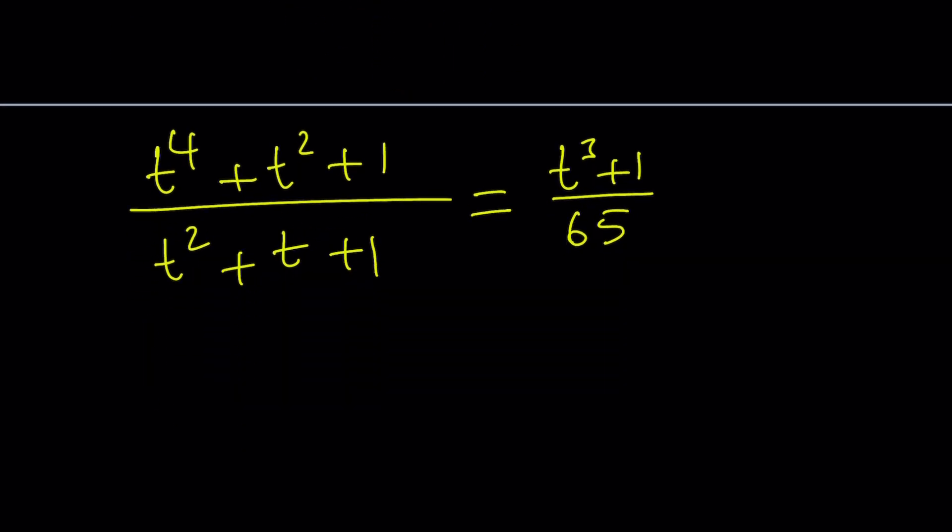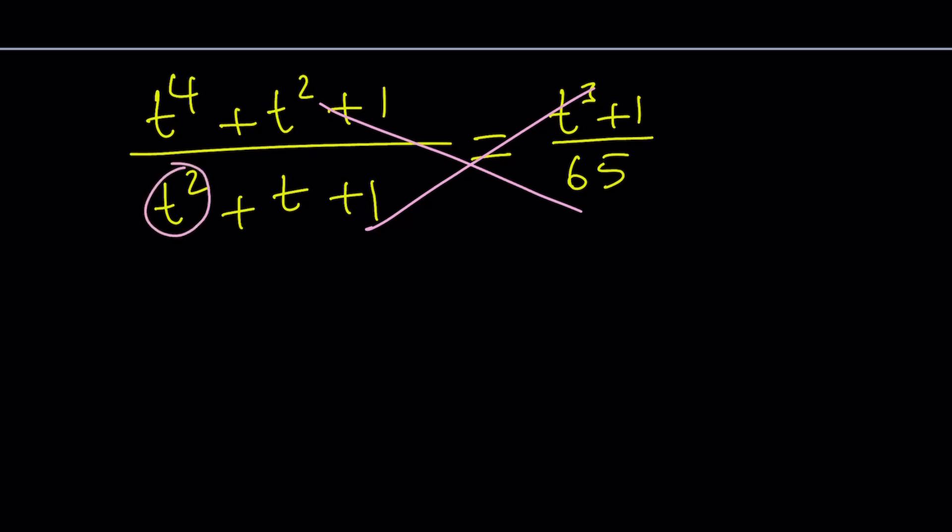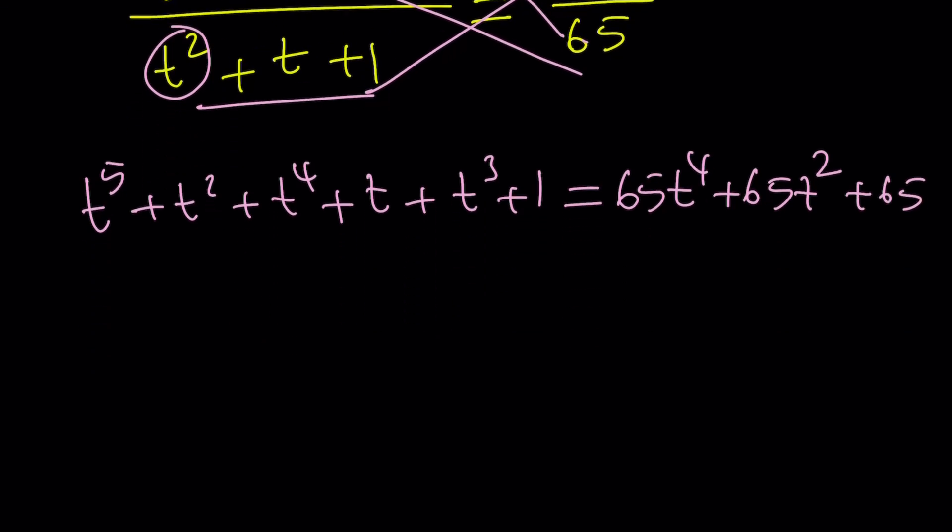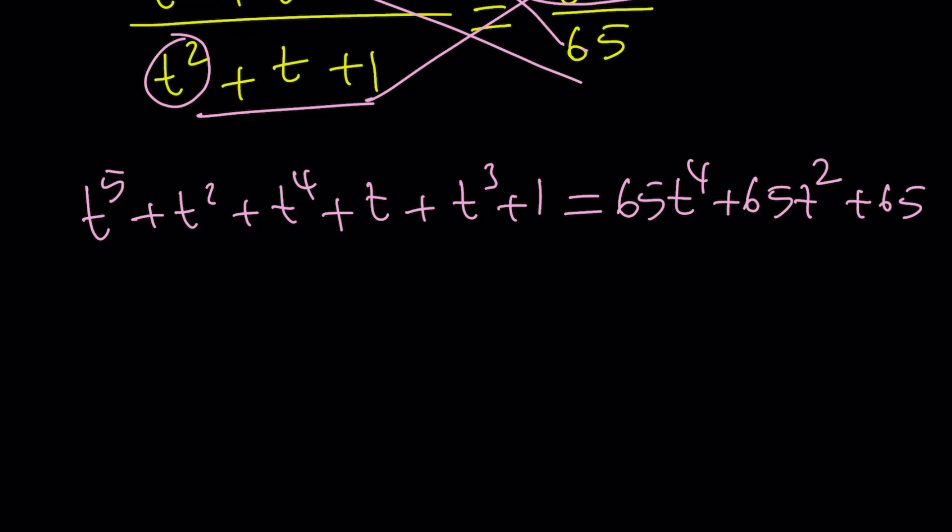Great. Now, at this point, it's probably very tempting to cross multiply. Let's see what happens if we do. Let's go ahead and cross multiply. This should give us t to the fifth plus t squared plus t to the fourth plus t plus t cubed plus 1. And that should equal 65t to the fourth plus 65t squared plus 65. Not very awesome looking, but let's put everything on the same side.